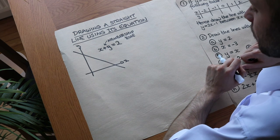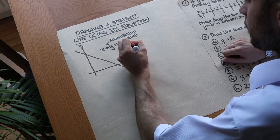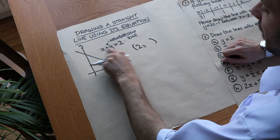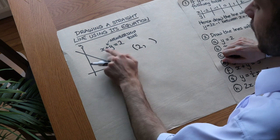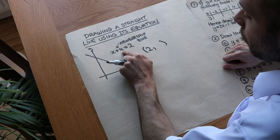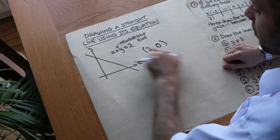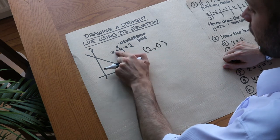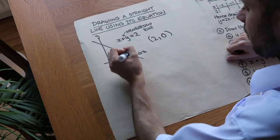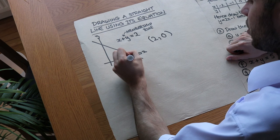Let's say I had a particular point and I knew that the x value was 2. What would the y value have to be such that this point obeys the membership rule? Well if x was 2, then 2 plus what equals 2 — the y value would have to be 0. And then 2 plus 0 is equal to 2, so I could plot that point at (2, 0) on my axis.